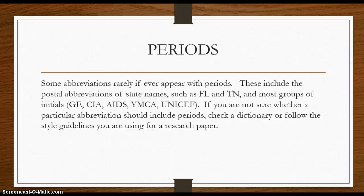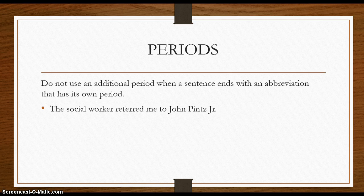Here's an important thing to note: if you're ending a sentence with an abbreviation that has its own period, don't put another period behind it. Look at the example: "The social worker referred me to John Pence Jr." Jr. already ends with a period, so there's no need to put another period at the end of the sentence. One will do just fine.